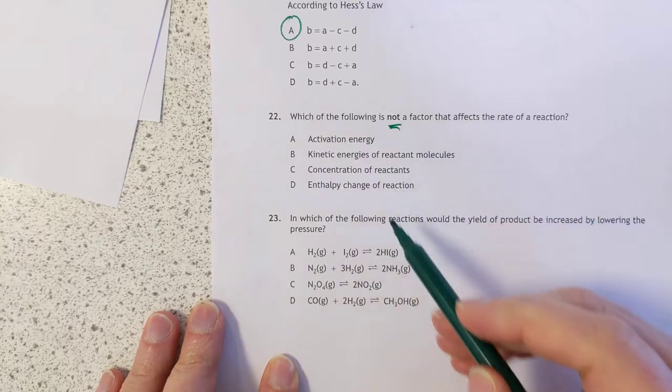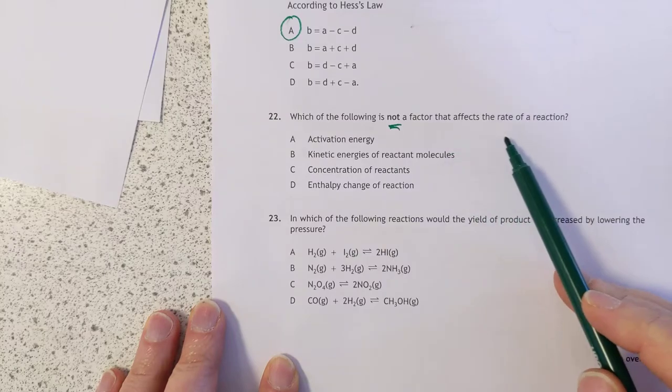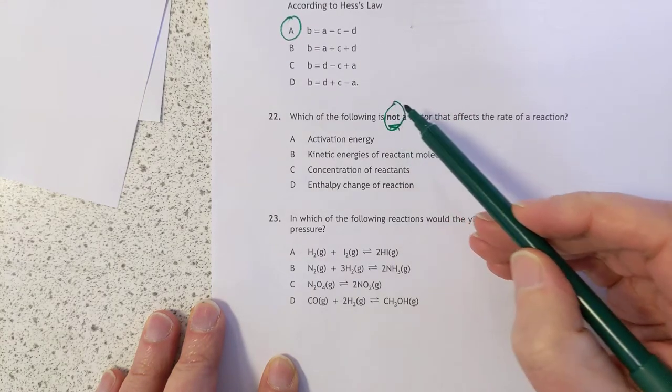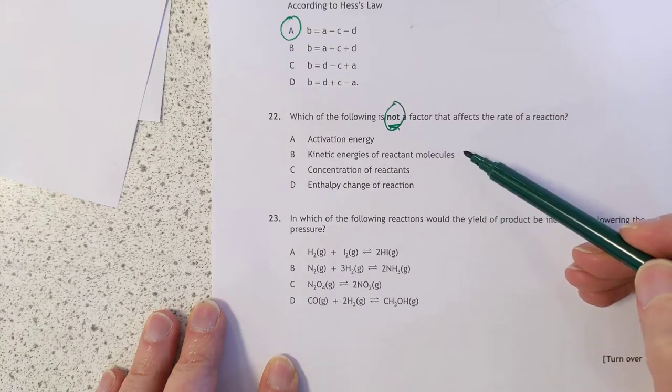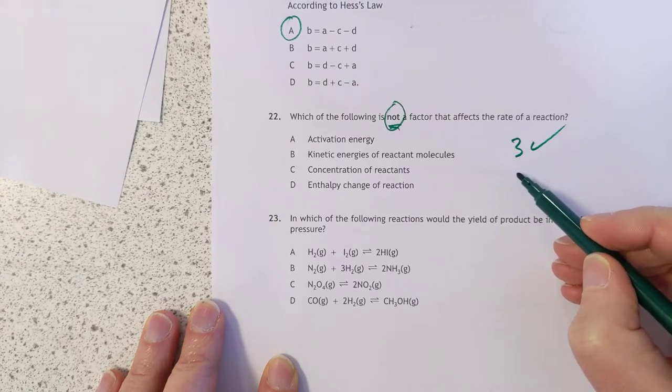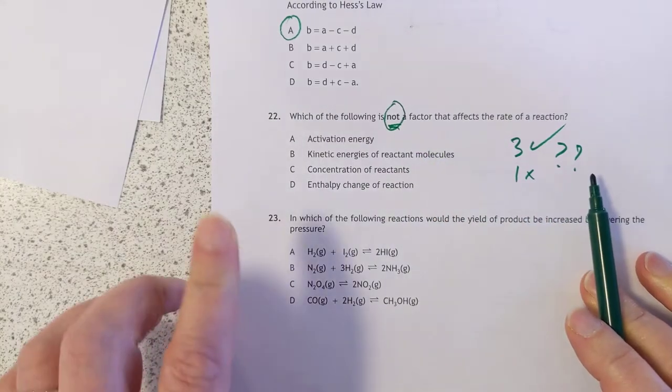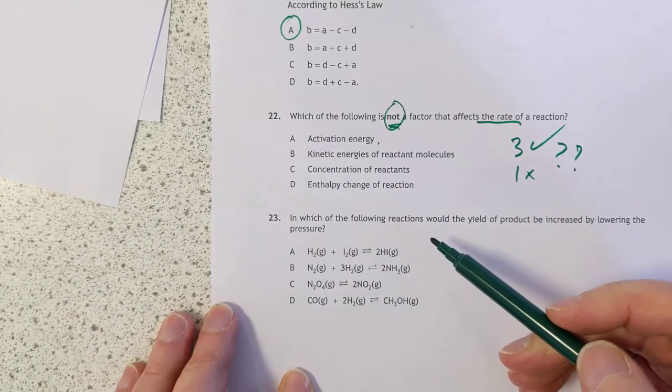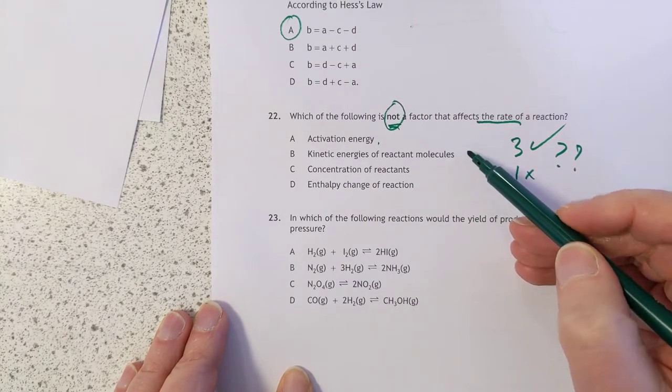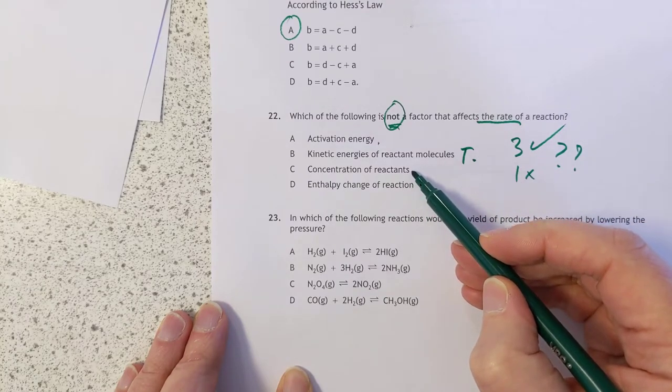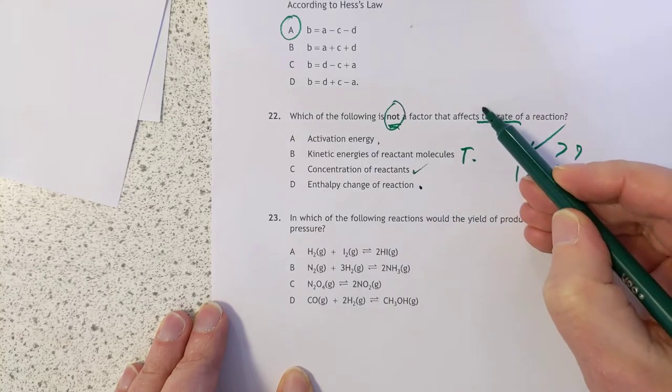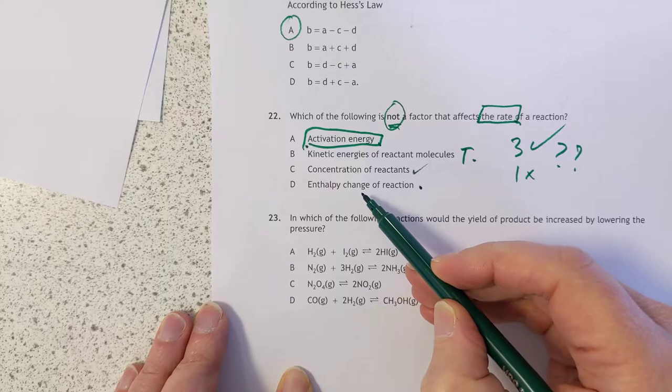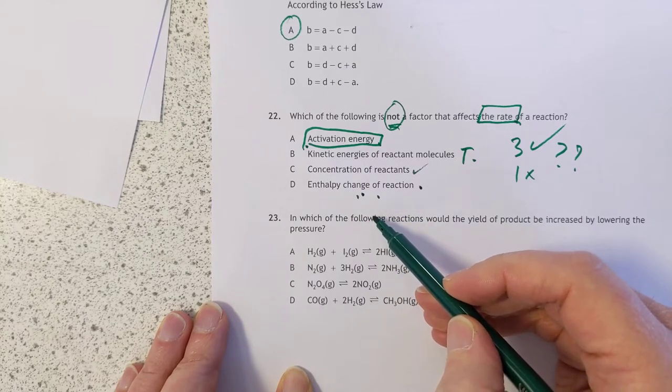Question 22: Which of the following is not a factor. RTFQ. Read the question. Not a factor that affects the rate of reaction. By the way, it's so easy to miss that, which is one of the reasons why I sometimes like to check the other answers are wrong. Because if I have missed this, I will get three correct answers and one wrong one. That probably makes me go back to think that I have missed something. Activation energy will affect the rate, so it's not an answer. Kinetic energies of reactant molecules, in other words the temperature, that will affect it. Concentration, that will also affect it. Enthalpy change does not actually affect the rate of a reaction.